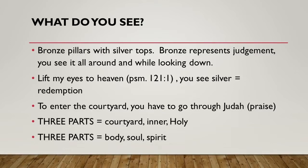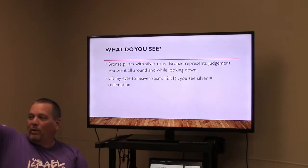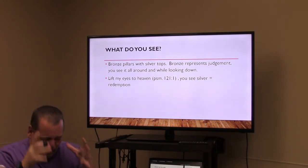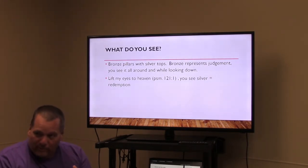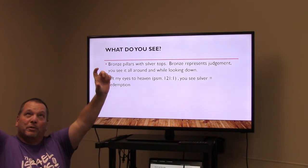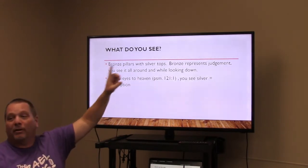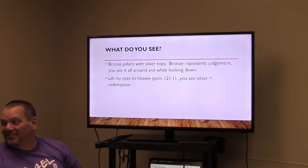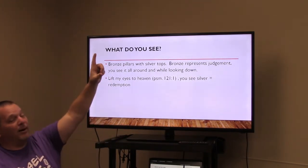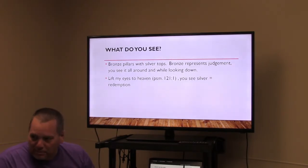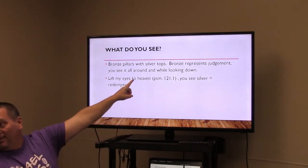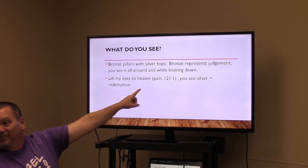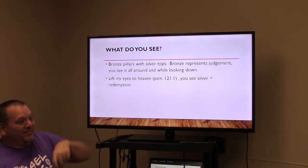Olive oil represents Christ's anointing which breaks Satan's yoke. Spices from the altar of incense represent the sweet fragrance of his ministry to the saints and to God. As a foreigner wandering through the desert seeing this structure, you would see bronze pillars with silver tops. Bronze means judgment, but Psalm 121:1 says 'I will lift my eyes to the hills from where my help comes.' Looking up at the silver tops — redemption — rather than down at judgment.